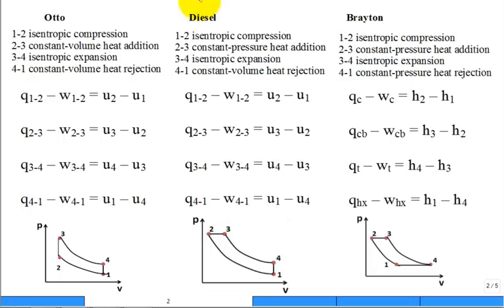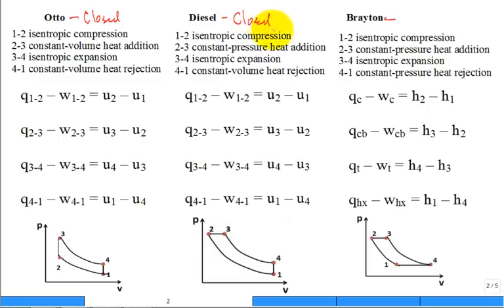The Otto cycle models your gasoline engine, the Diesel cycle models your diesel engine for transportation, and the Brayton cycle models essentially a gas turbine for electric power production, or shaft power output — gas turbine in a tank, large ship, or helicopter. The Otto and Diesel are closed systems — a piston and cylinder with a trapped amount of air — while the Brayton is an open system where flow goes through the compressor, combustor, turbine, and a heat exchanger to close the loop.